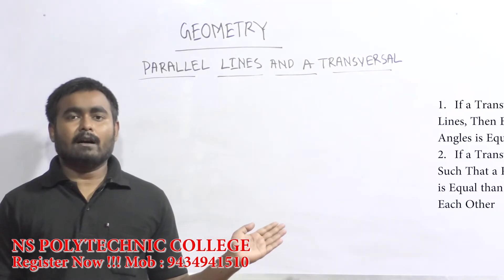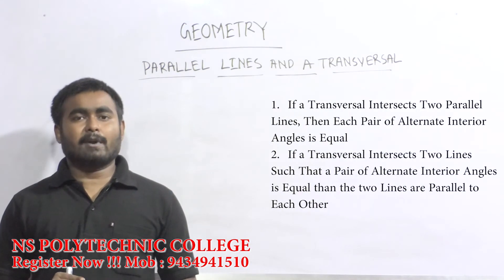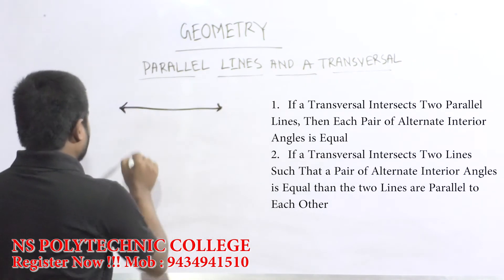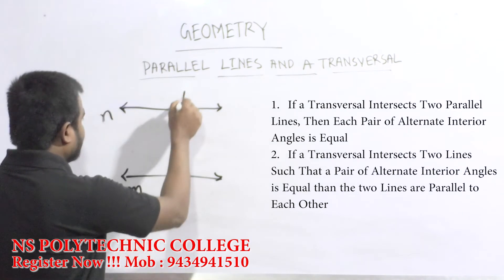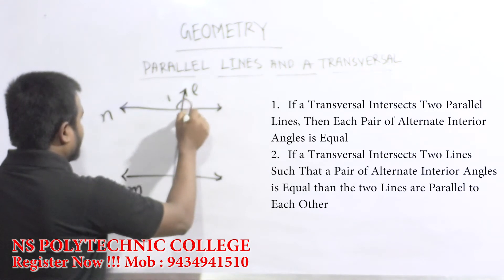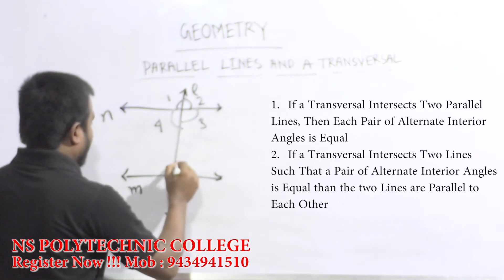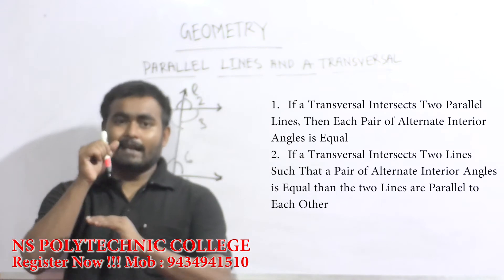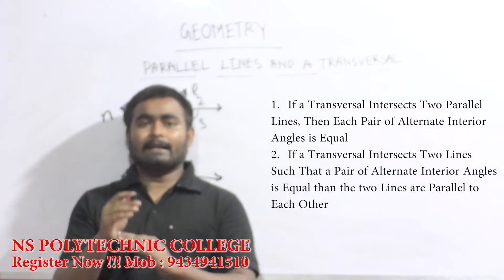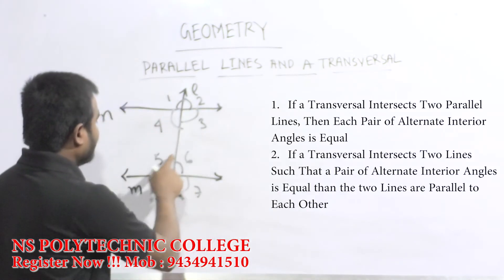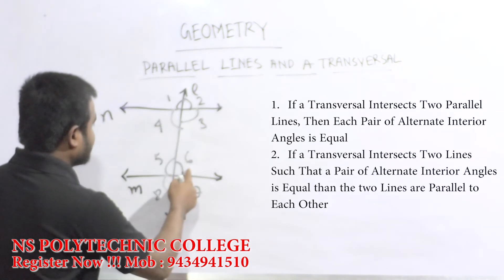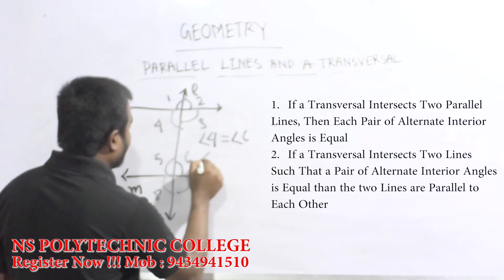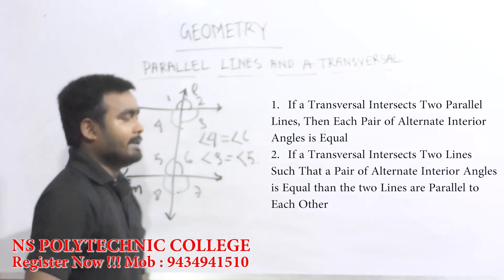Next formula हम लोग देखते हैं: "If a transversal intersects two parallel lines, then each pair of alternate interior angles are equal." हम लोग दो line draw करेंगे, नाम देंगे M और N, और transversal का नाम L है। Interior angle के लिए alternate: angle 4 = angle 6, और angle 3 = angle 5।